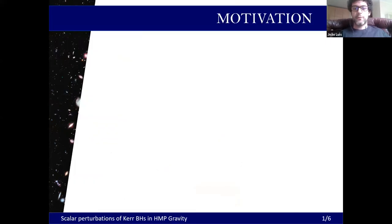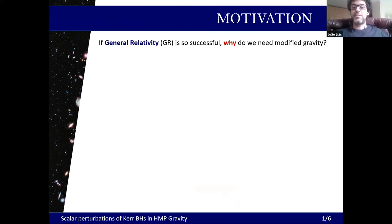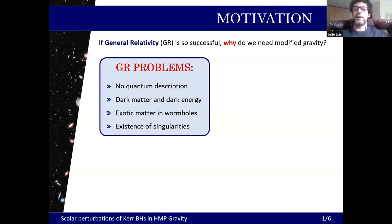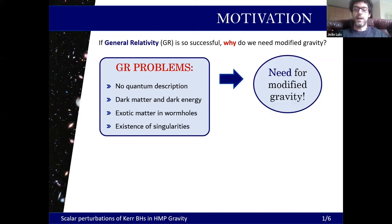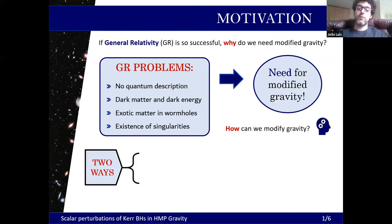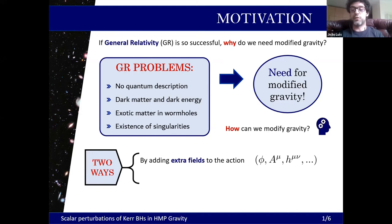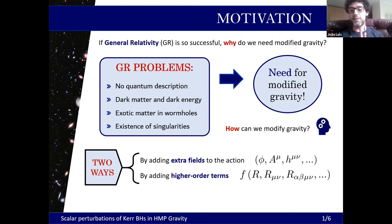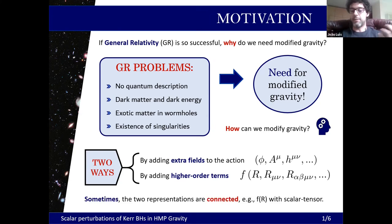The motivation for studying modified gravity: despite GR's success, it presents problems — it doesn't give a quantum description of gravity, and it requires dark matter and dark energy for the cosmological standard model. These are things not understood at a fundamental level. Modified gravity attempts to solve these problems, either by addition of extra scalar, vectorial, or tensorial fields, or by higher-order terms as in f(R) and Gauss-Bonnet gravity. Sometimes these two modifications are connected, such as between f(R) and scalar-tensor theories.